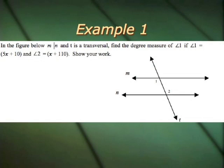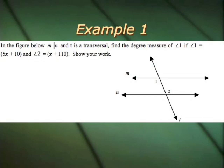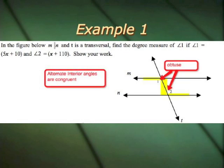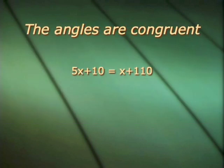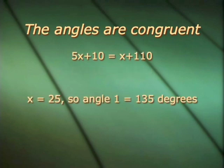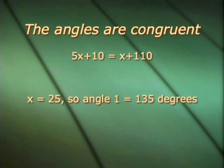Let's pause and try this problem on your own first. I hope you found the Z, because these angles are congruent. So you set them equal to each other and solve. I hope you got x equals 25. So when you plug it back in for angle 1, you get 135 degrees.